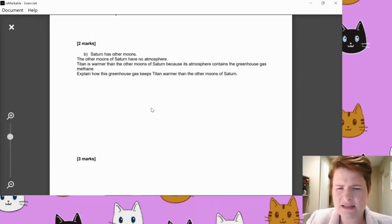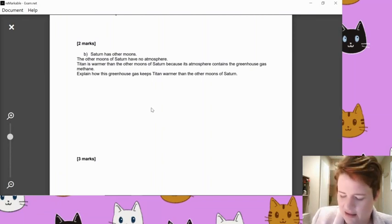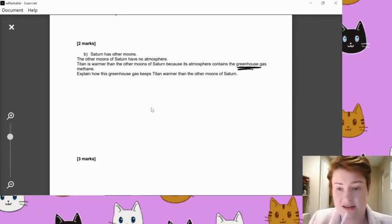6B. Saturn has got other moons. Cool. Hasn't Saturn got like the most number of moons in the solar system? Like 17 or something like that? I don't know. If you're into your planets, let me know. The other moons of Saturn have no atmosphere. Titan is warmer than the other moons of Saturn because its atmosphere contains greenhouse gases. Mentioned that a second ago, didn't I? Methane. Explain how this greenhouse gas keeps Titan warmer than the other moons of Saturn.